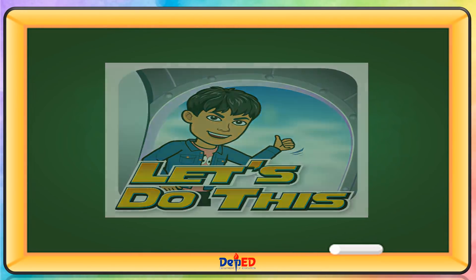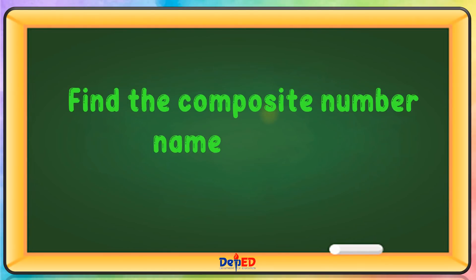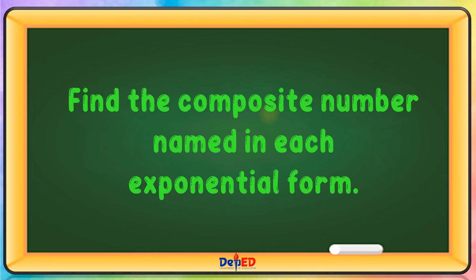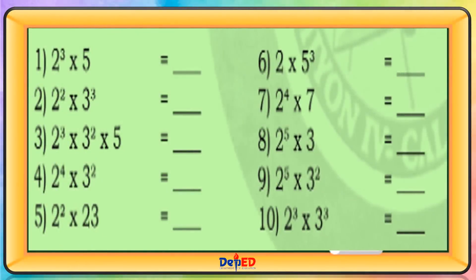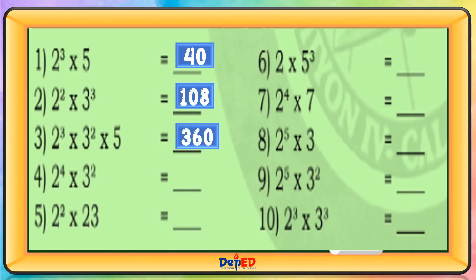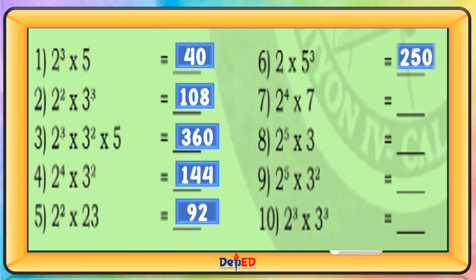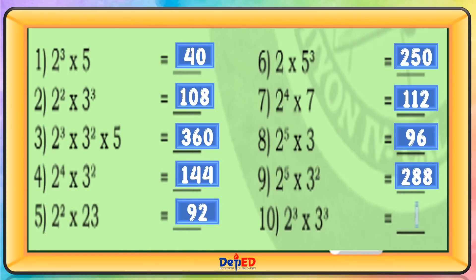Let's do this. Find the composite number named in each exponential form. 1 is 40. 2 is 108. 3 is 360. 4 is 144. 5 is 92. 6 is 250. 7 is 112. 8 is 96. 9 is 288. 10 is 216.